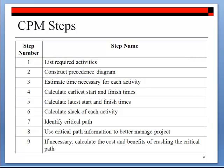In step one, all the required activities in the project are listed. More importantly, the interdependencies among these activities are identified by determining the immediate predecessors of each activity. Throughout the rest of this supplement, we assume that step one is already completed, and we'll focus on steps two through seven listed in this figure. We'll exemplify how CPM works in the following slides.